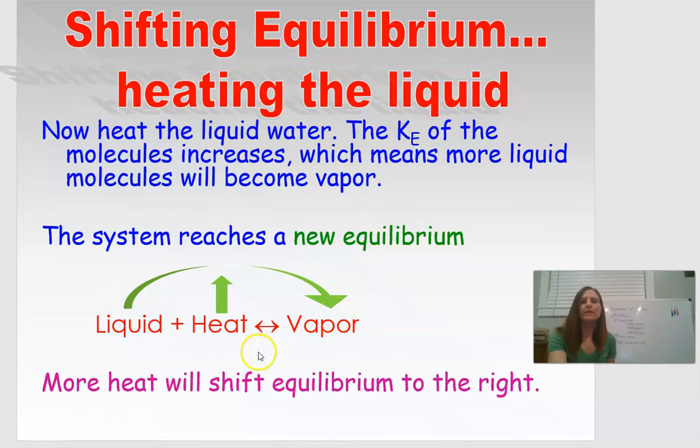So if we increase the heat of this system, we shift the equilibrium towards the product, toward the vapor. So as we heat up the container, we should be making more and more and more gas. That should be pretty obvious.